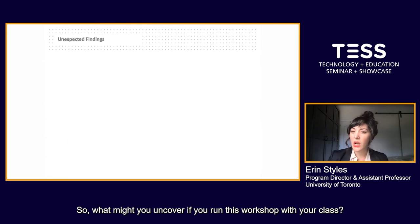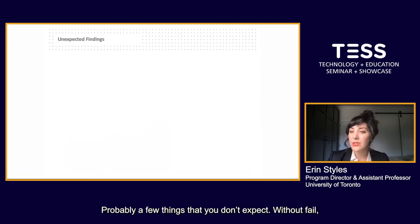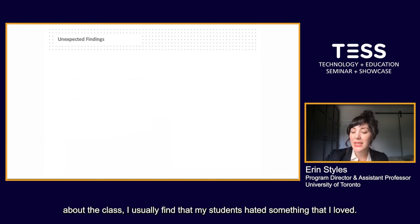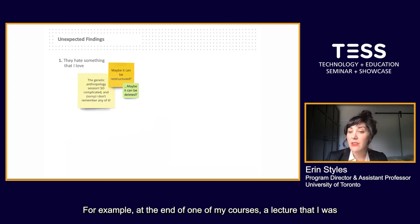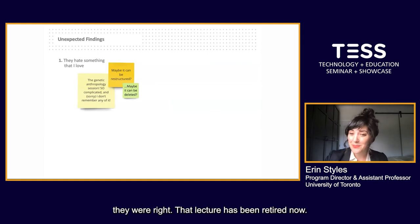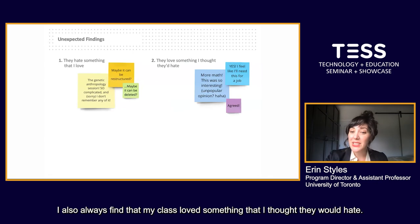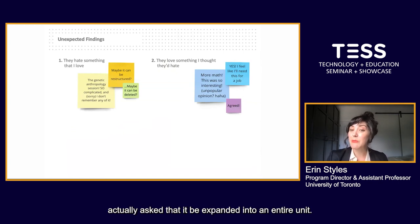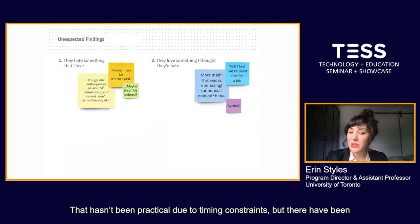So what might you uncover if you run this workshop with your class? Probably a few things that you don't expect. Without fail, every year, in addition to confirming a few things that I already suspected about the class, I usually find that my students hated something that I loved. For example, at the end of one of my courses, a lecture that I was really excited for got bashed to smithereens by the class — and you know what? They were right. That lecture has been retired. I also always find that my class loved something that I thought they would hate. A short series of lectures I thought were almost blindingly complicated and filled with algebra were such a crowd favorite that my students actually asked that it be expanded into an entire unit.